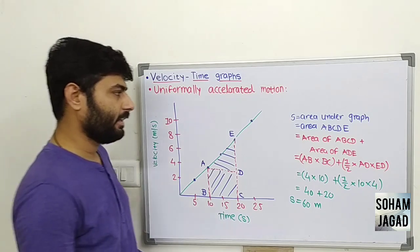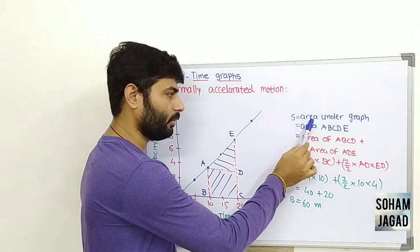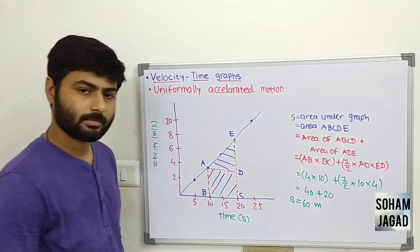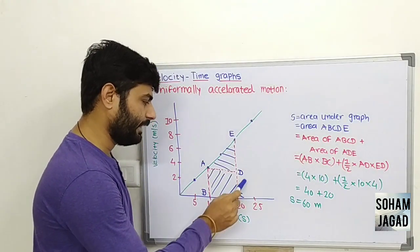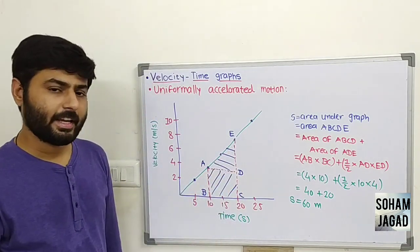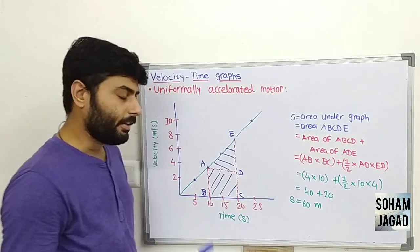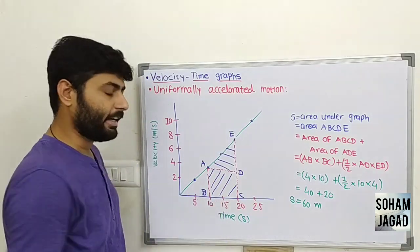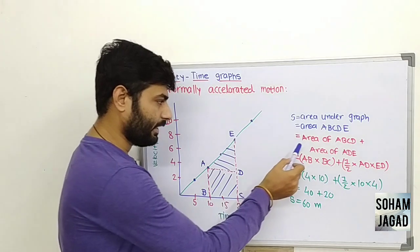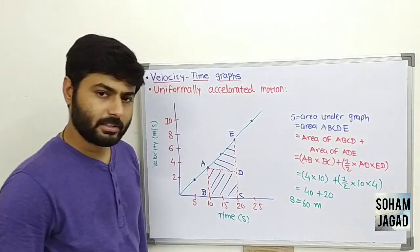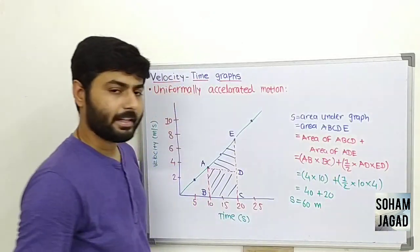So distance covered S is equal to the area under the graph, which is area ABCDE. We divide this into: area of rectangle ABCD, which is length times breadth (AB into BC), plus area of right-angle triangle ADE, which is half times base AD times altitude ED.